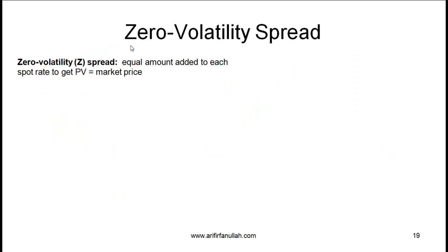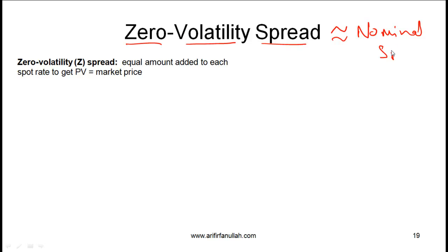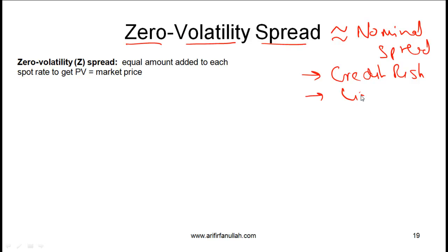Now let's understand another spread measure called the zero volatility spread. The zero volatility spread is slightly more accurate than the nominal spread but will be approximately equal to it. The zero volatility spread is also telling us about the extra yield or return that an investor expects to compensate for credit risk, liquidity risk, and option risk — so in that sense it is somewhat similar to the nominal spread.